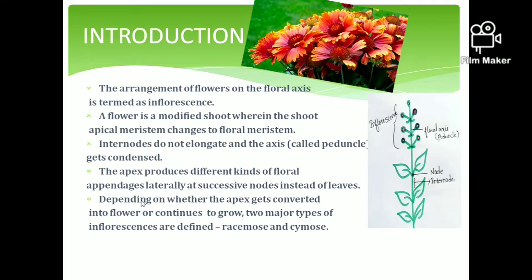Depending on whether the apex gets converted into a flower or continues to grow, two major types of inflorescence are defined. That is racemose and cymose. If the apex becomes a flower, or continues to grow, these two types — racemose and cymose inflorescence — are distinguished.